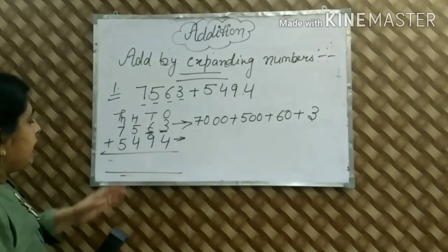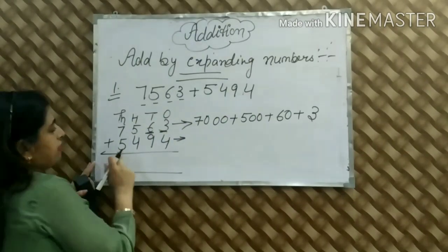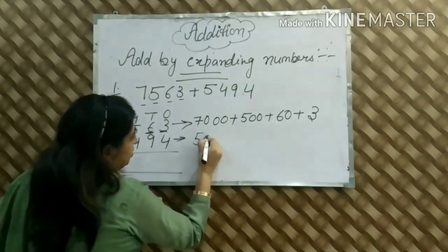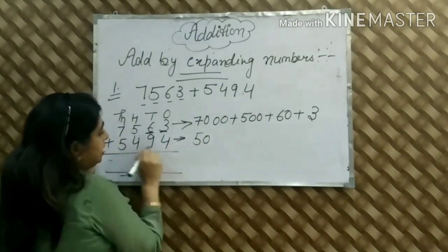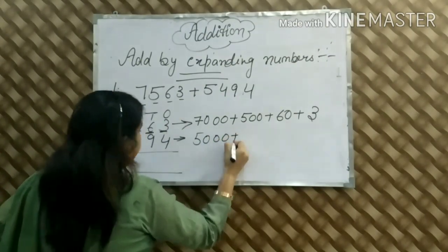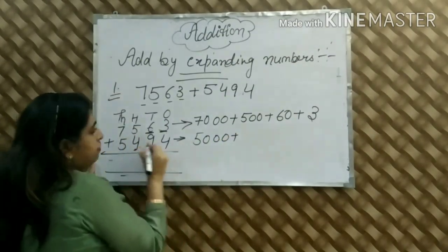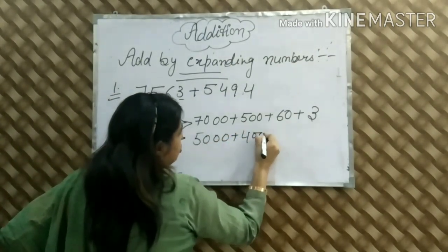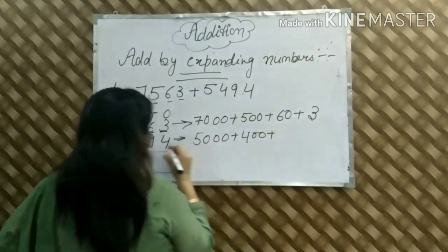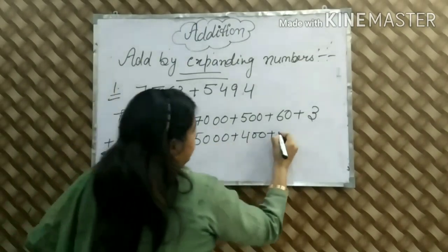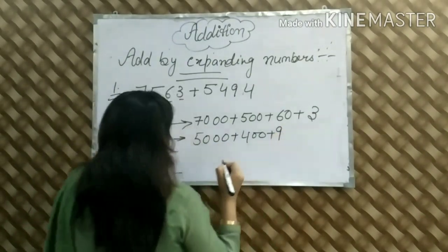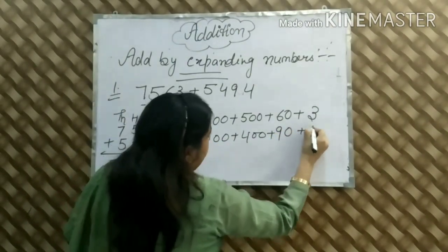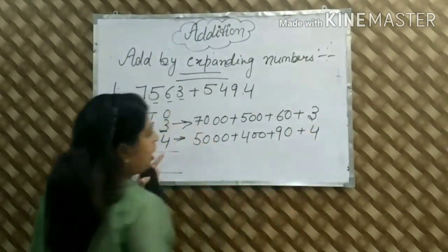Next we have five thousand. After 5 there are 3 digits, so we write 5,000. Next we have 4 — after 4 there are 2 digits, so we write 400. Next we have 9 — after 9 there is 1 digit, so we write 90. And last is our 4.